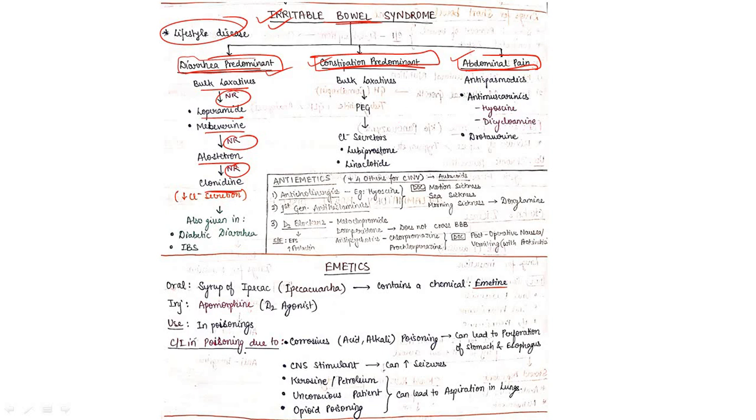Constipation predominant: go for bulk laxative, then PEG, then chloride secretagogues such as lubiprostone or linaclotide. In abdominal pain, we can give anti-spasmodics, anti-muscarinics such as hyoscine, dicyclomine, and drotaverine.